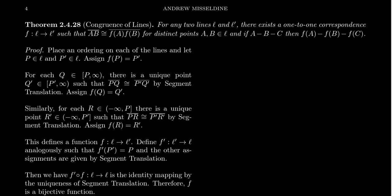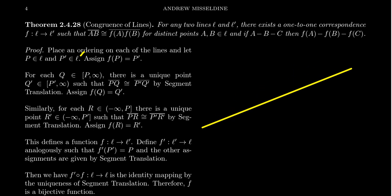How are we going to accomplish this? Since we are in a congruence geometry, which is an ordered geometry with congruence axioms, each line has an ordering. We'll use this ordering to help construct the bijection. Pick a point P on line L and a point P prime on line L prime, and assign F(P) = P prime. We've also chosen an order on these lines, indicated by an arrow pointing in the upward direction.